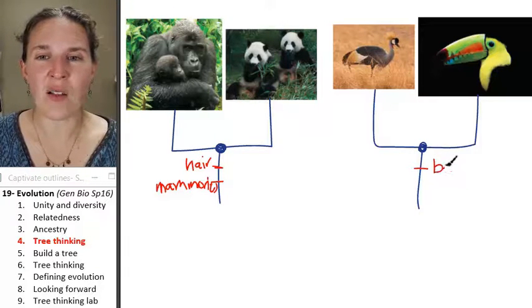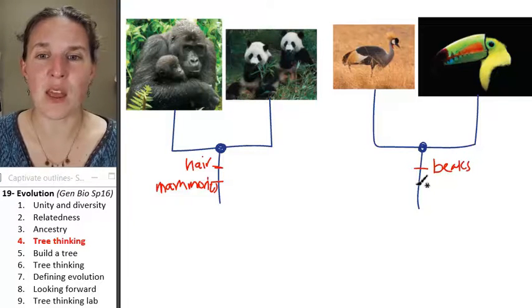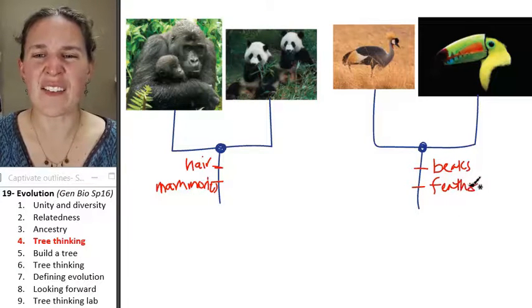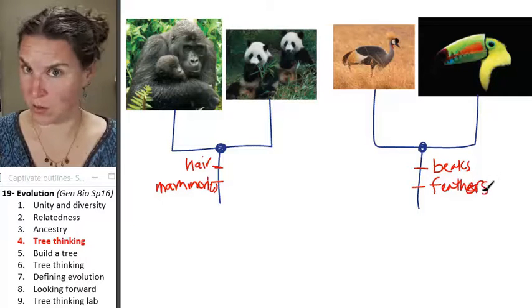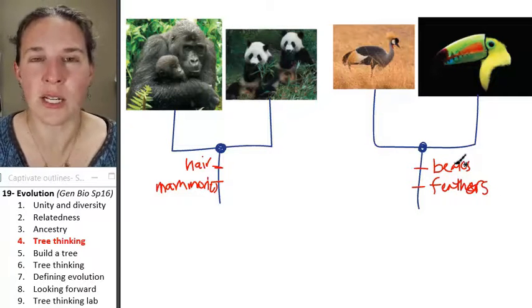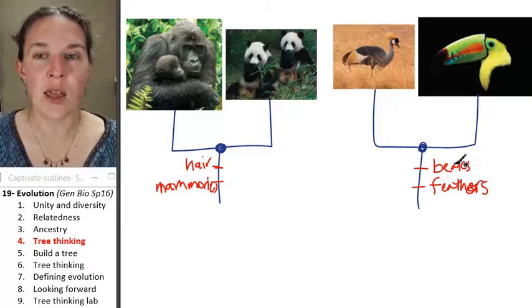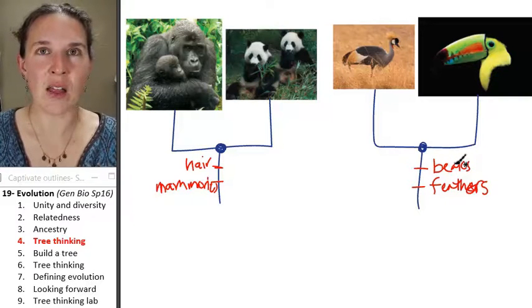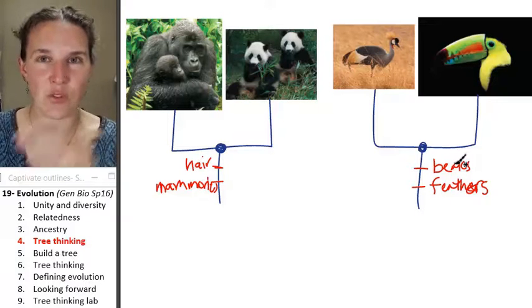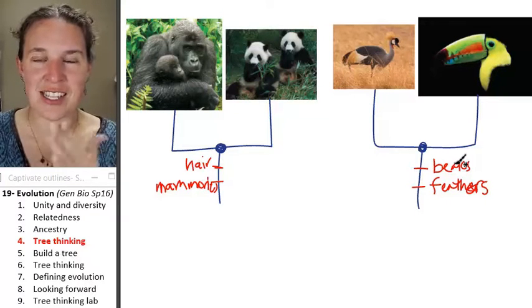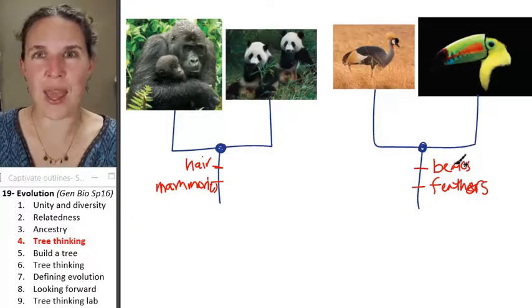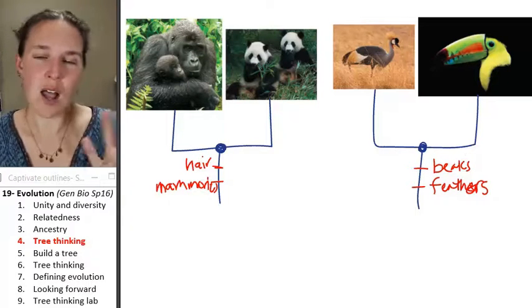They all have beaks. They all have feathers. They all have, that says feathers. They have hollow bones. They breathe in circles. Oh, my gosh, birds are so cool. They can actually inhale and exhale at the same time so that they have like this flow of air through their lungs that is circular, not in, out, in, out, way more efficient. Awesome.